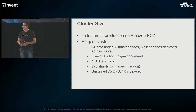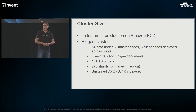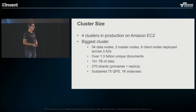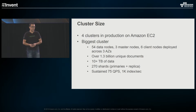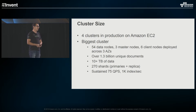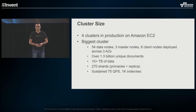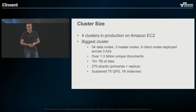The clusters that we have in production — we actually have four of them. I'm just going to focus on the biggest one because that's the most interesting. It's 54 data nodes, three master nodes, six client nodes, all deployed across three availability zones. We have over 1.5 billion unique documents in the system, 10-plus terabytes of data — this is only the primaries; if you include the replicas, that jumps to 30 terabytes. We have about 270 shards in the system, including primaries and replicas. We do sustained 75 queries per second from our services, but the cluster itself handles about 3,000 queries per second. Sustained indexing load is 1,000 operations per second, and we spike to 3,000, sometimes 5,000 or 6,000 indexing operations per second.